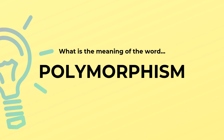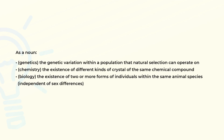What is the meaning of the word polymorphism? As a noun, in genetics: the genetic variation within a population that natural selection can operate on.